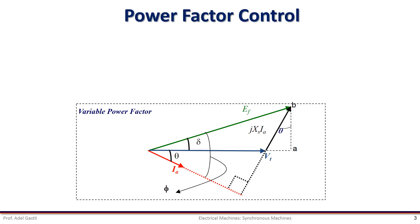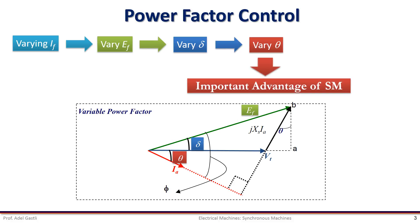Unlike induction machines, synchronous machine power factor is controllable by the field or excitation current IF. By varying the excitation current IF, the excitation voltage varies, its angle delta varies, and the power factor angle theta varies also. This is considered as an important advantage for the use of synchronous machines.